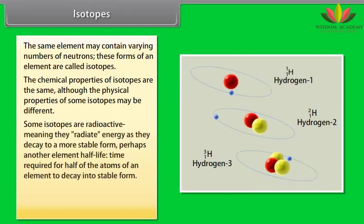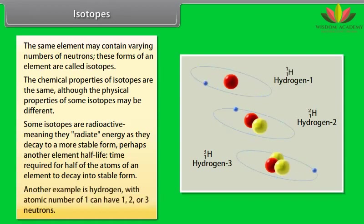Some isotopes are radioactive, meaning they radiate energy as they decay to a more stable form, perhaps another element half-life. Time required for half of the atoms of an element to decay into stable form. Another example is hydrogen with atomic number of 1 can have 1, 2 or 3 neutrons.